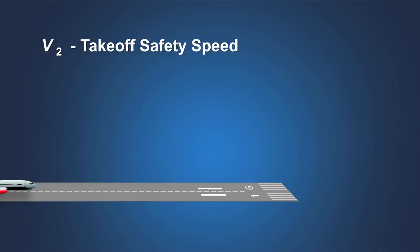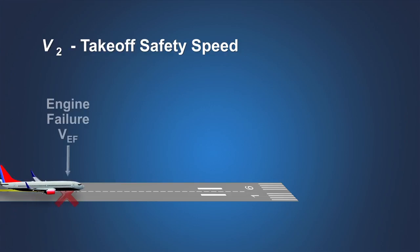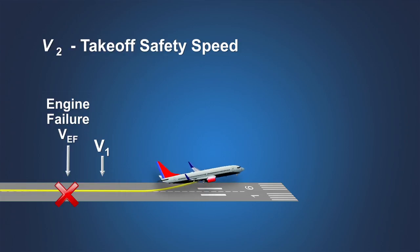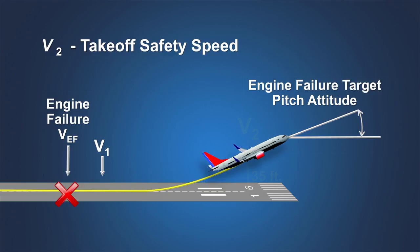It is important to understand the significance of V2 speed. If the engine fails at the most critical point in the takeoff at VEF, which is reached just before V1 speed, and the pilot electing to continue the takeoff at V1 rotates into the target engine failure takeoff pitch attitude, the airplane will attain V2 speed at the point that it attains a height of 35 feet above the runway. If the engine failure occurs above V1, many AFM procedures recommend rotating to the same target pitch attitude. As a result, the speed obtained at 35 feet will be higher than V2. These procedures recommend maintaining this higher speed up to a maximum of V2 plus 10 to V2 plus 20 knots when such an increase does not affect climb performance.